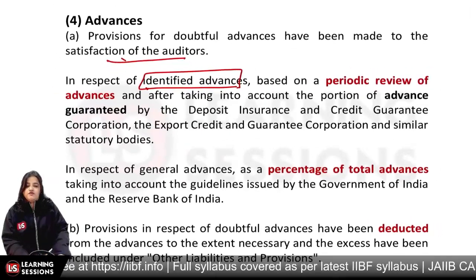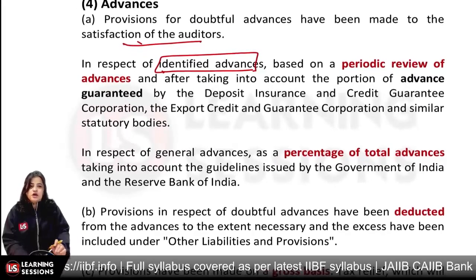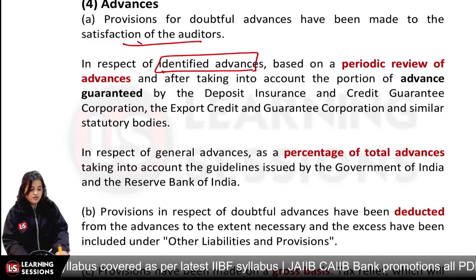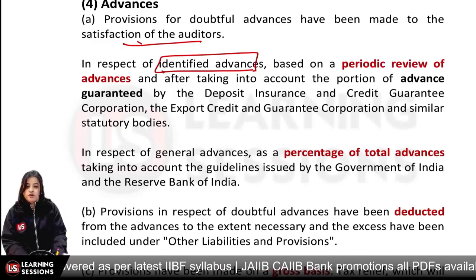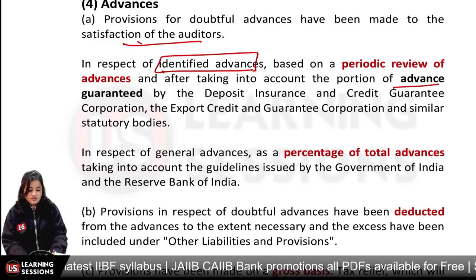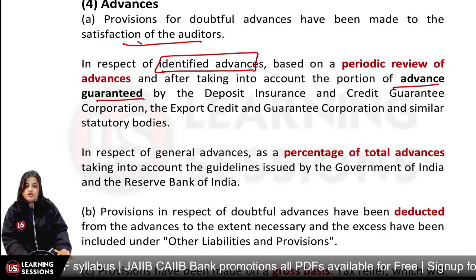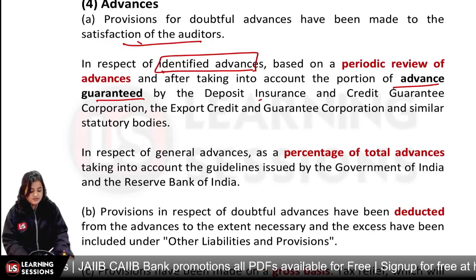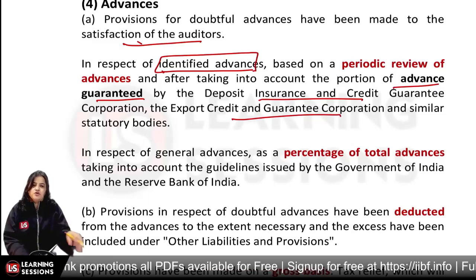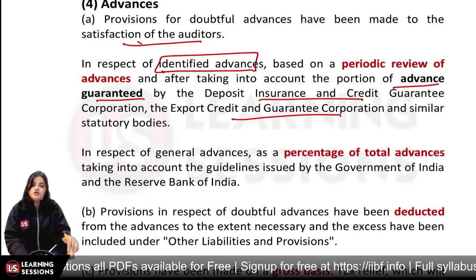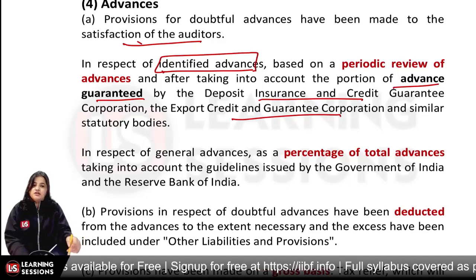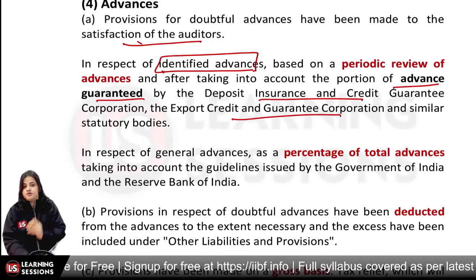We consider the advance amount after deducting the portion guaranteed by DICGC or ECGC, and the amount of collateral. After deducting these, if we identify advances separately, we make provision on them — as we have discussed in detail in the provision chapter. So we have to give this disclosure.